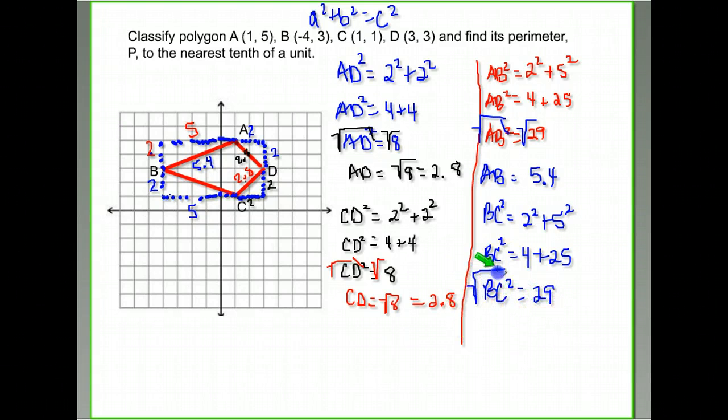And finally, we take the square root of both sides. And we get that BC is also the square root of 29, shocker, or 5.4, if we put that in our calculator.